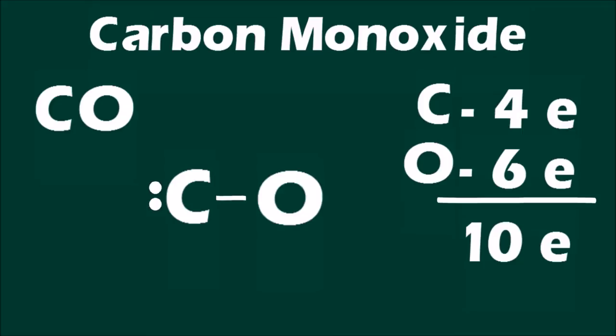For carbon monoxide, a compound with 10 valence electrons, a triple bond must be formed between carbon and oxygen to satisfy the octet rule.